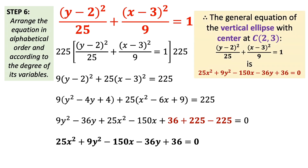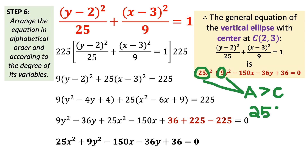This is the general equation of the given standard equation. Since the coefficient of x squared is greater than the coefficient of y squared — that is, 25 is greater than 9 — we have a vertical ellipse.